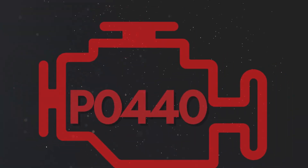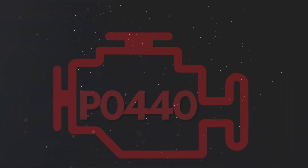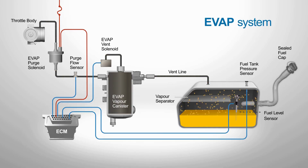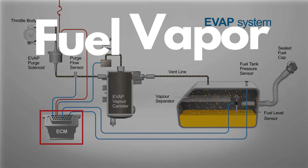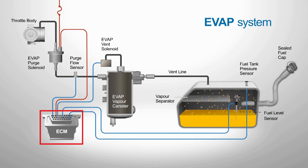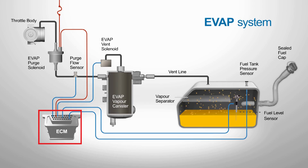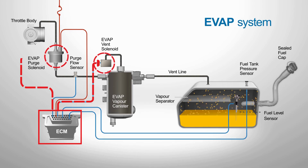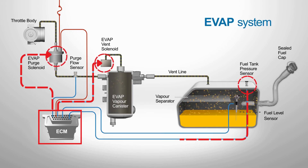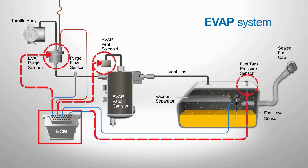Now let's learn why P0440 gets triggered. To ensure that the EVAP system is functioning properly, the ECU performs routine fuel vapor leak tests. These tests can happen when your vehicle is parked or while it's running. The ECM sends a signal to close the vent valve and the purge control valve. This seals the system and allows the ECM to monitor it for any pressure changes if the car is parked, or vacuum loss if the car is running.